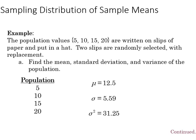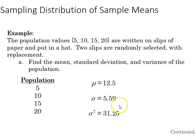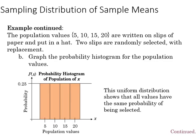Here's an example of a sampling distribution of sample means. If we have population values 5, 10, 15, and 20 written on slips of paper, put in a hat, and two slips are randomly selected with replacement — these are independent with equal probability — we find the mean, standard deviation, and variance of the population. The mean mu is 12.5, the standard deviation is 5.59, and the variance is 31.25. The probability histogram for the population values shows a uniform distribution, as all values have the same probability of being selected.